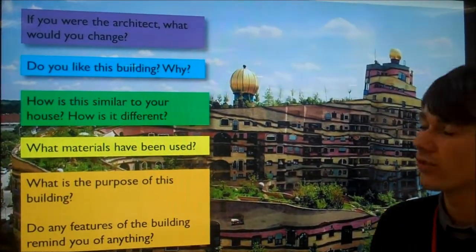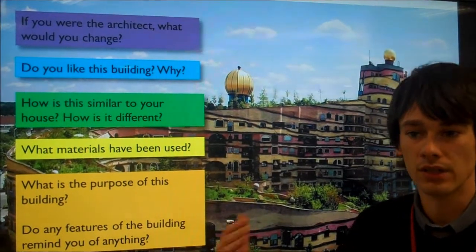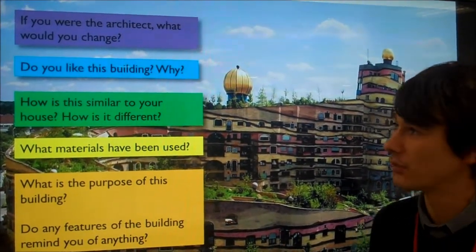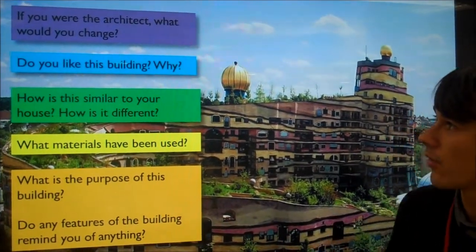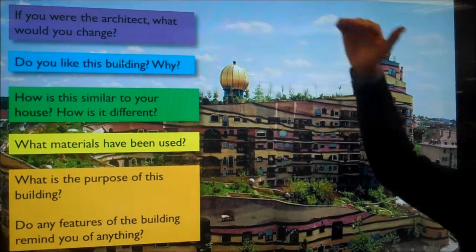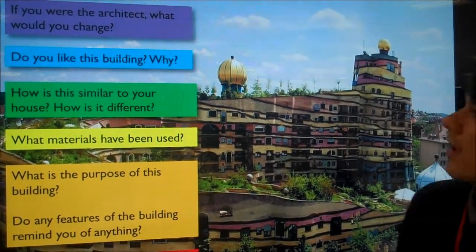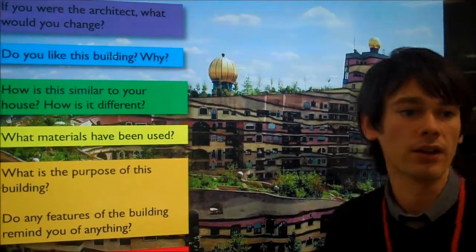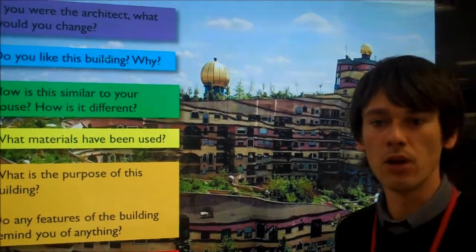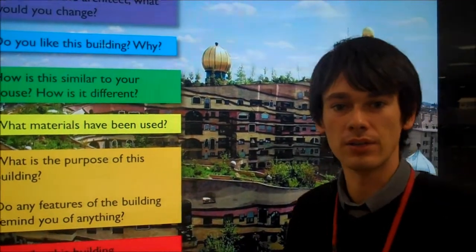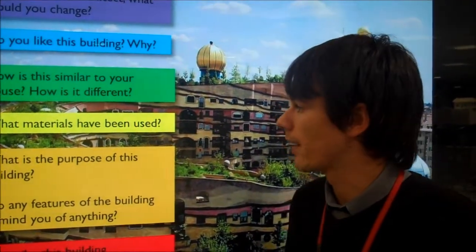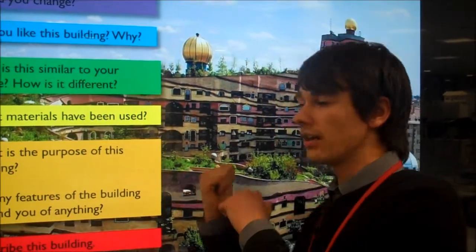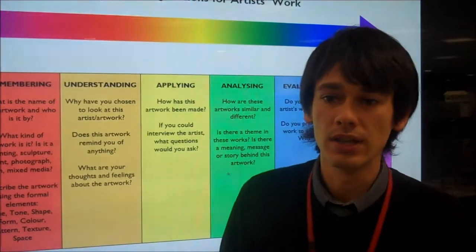Finally, creating, which is at the top of Bloom's Taxonomy as the most difficult, the most higher order thinking. If you were the architect, what would you change? If you were the artist, what would you do differently? If you were working with the artist, what would be better about it? How could you make your work in response to this?